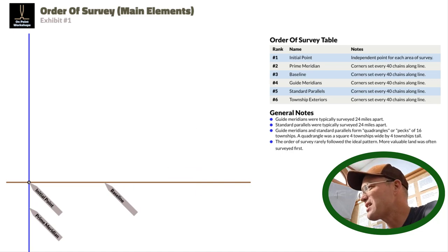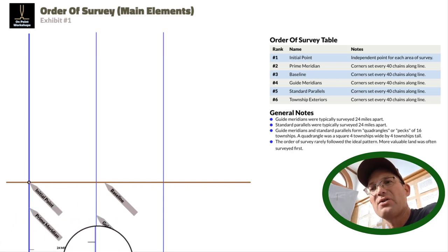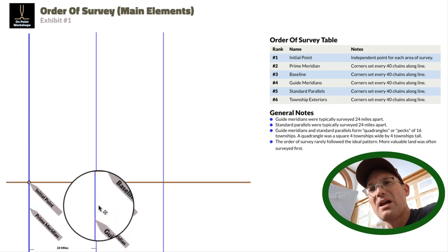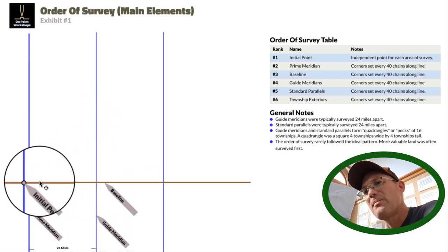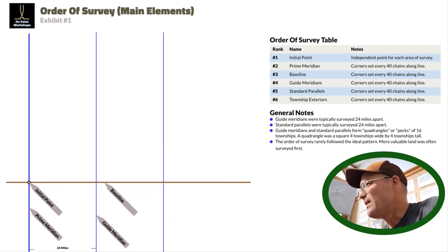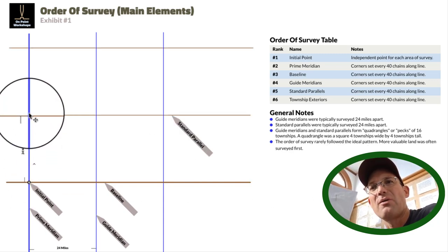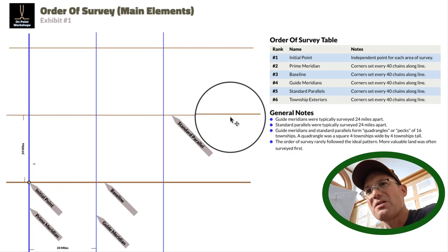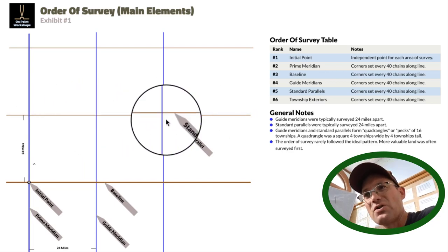The next thing they do is survey what they call guide meridians. Every 24 miles, they run north-south on a guide meridian, setting a monument every half mile or 40 chains. They do the same thing on the baseline, setting a monument every half mile or 40 chains. Then they do what we call standard parallels. Every 24 miles, they survey east-west on a standard parallel, again setting monuments every 40 chains or half mile.